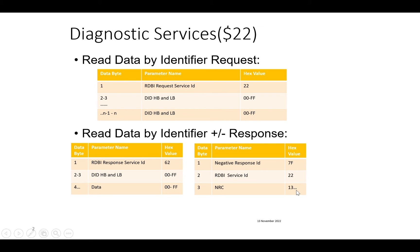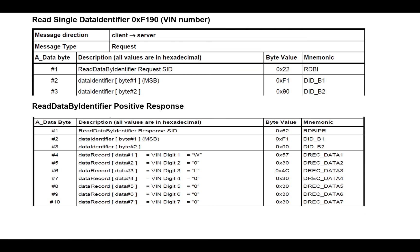Let's take an example of reading a single data identifier — the VIN number — with DID 0xF109. The request format would be 0x22 followed by 0xF109 as the DID number. The response would then contain 0x62, the DID 0xF109, followed by its data record.